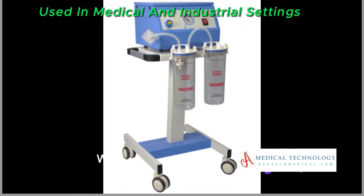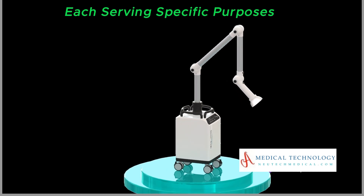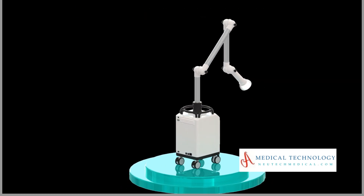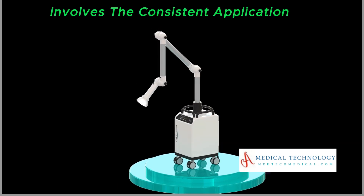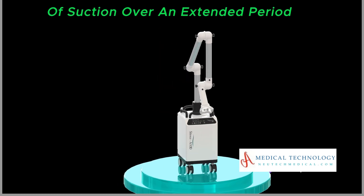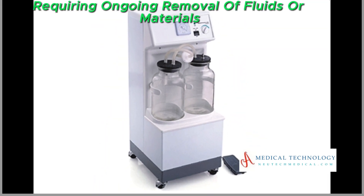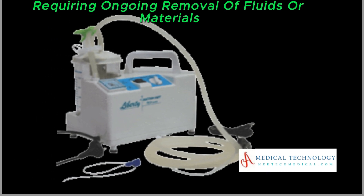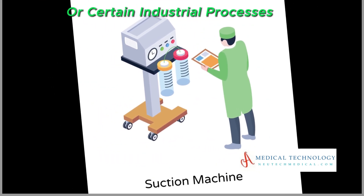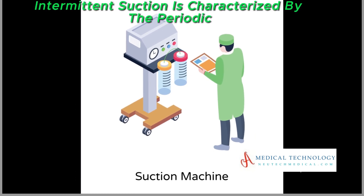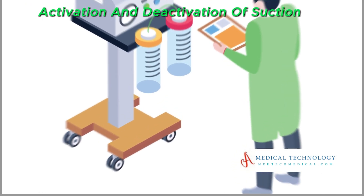There are various types of suction used in medical and industrial settings, each serving specific purposes. Continuous suction involves the consistent application of suction over an extended period. It is often used for tasks requiring ongoing removal of fluids or materials, such as in medical drainage systems or certain industrial processes.